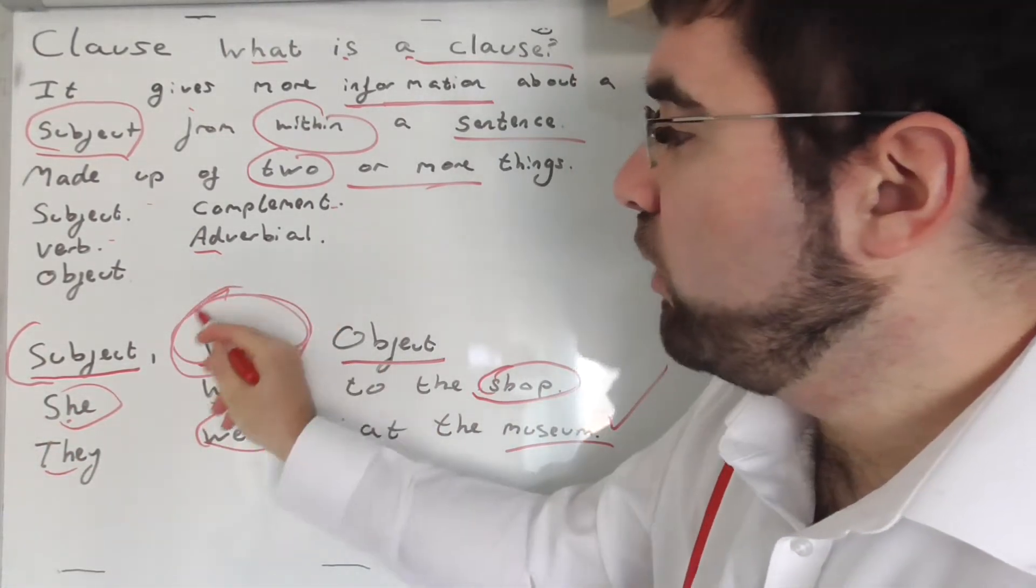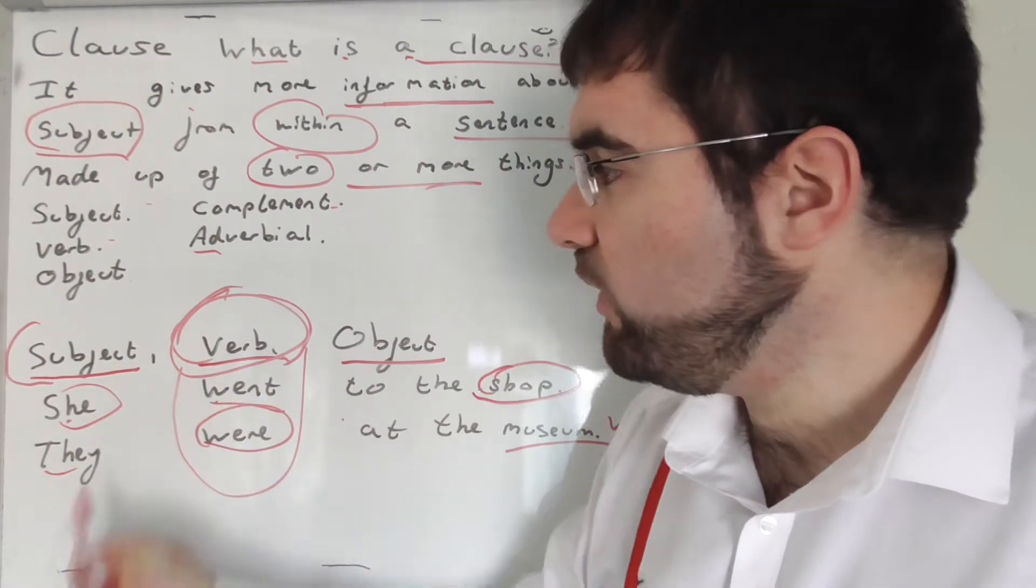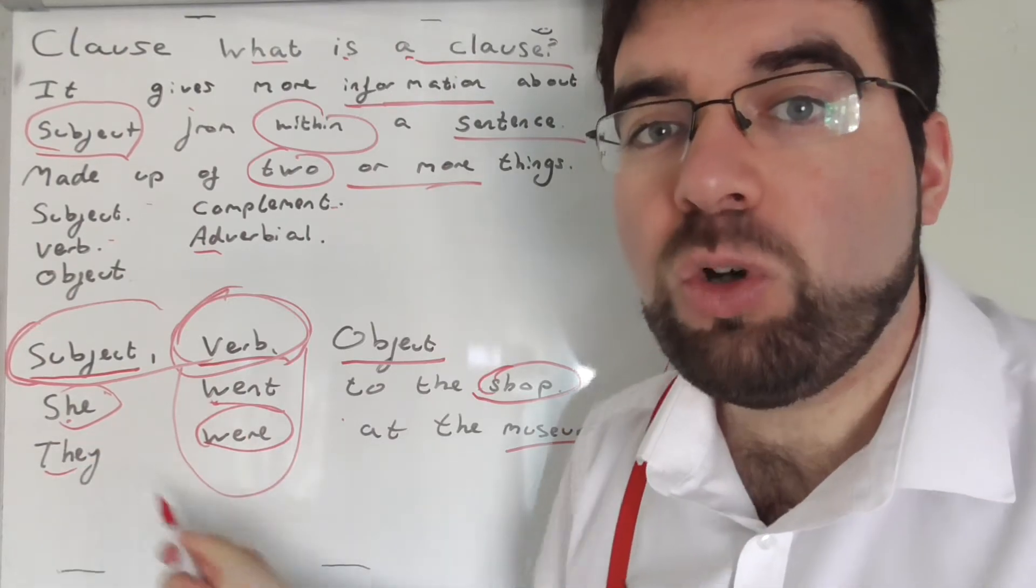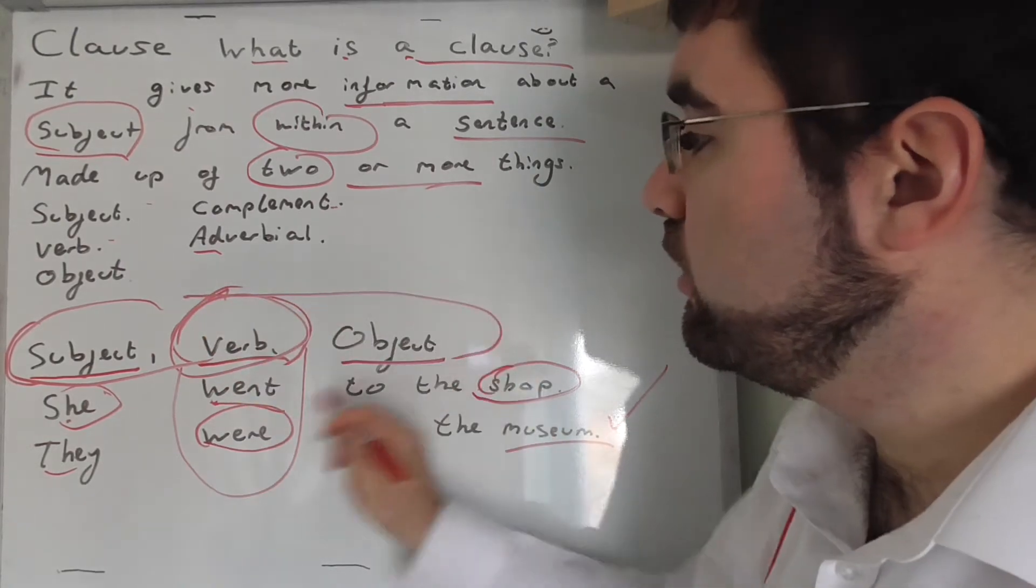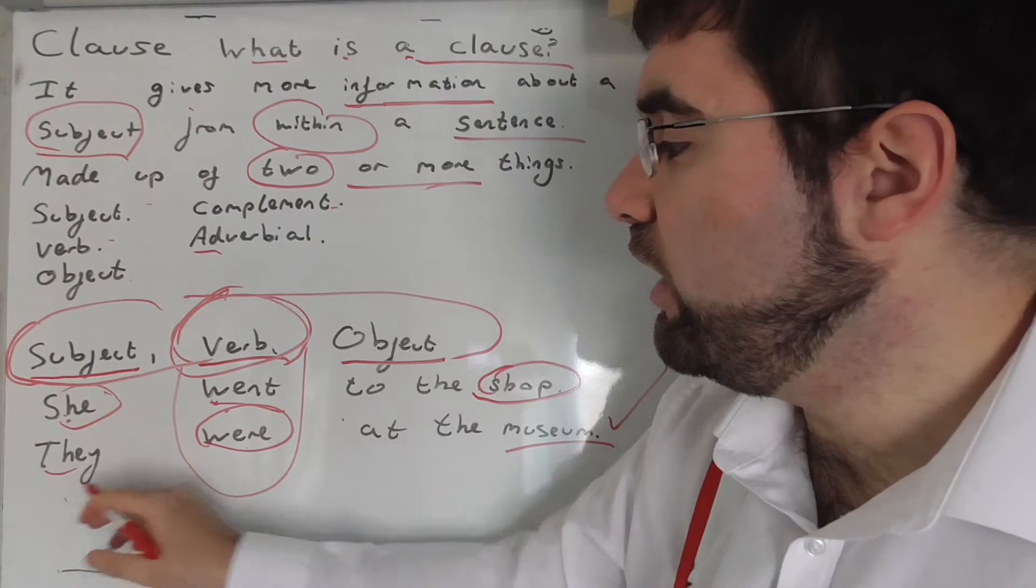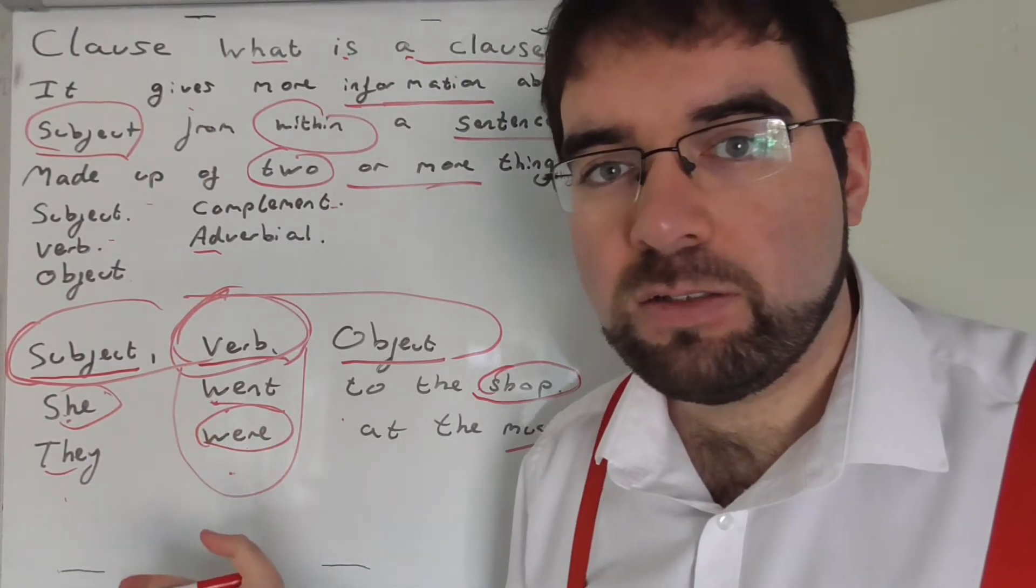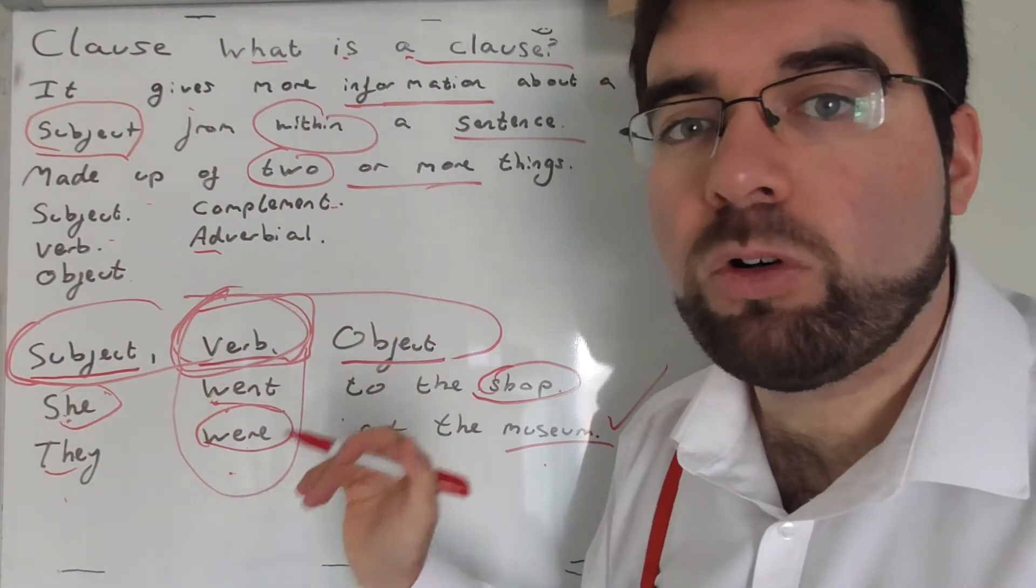In its simplest form, a clause could be one word, a verb. It could be a verb and a subject. She went, he listened, he talked, he walked. And then subject, verb, object. She went to the shop, he listened to us, they walked to the party. And beyond. Again, at the very least, it could be a verb, one word. Listen, walk, talk, and beyond.